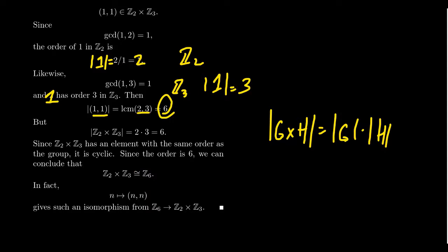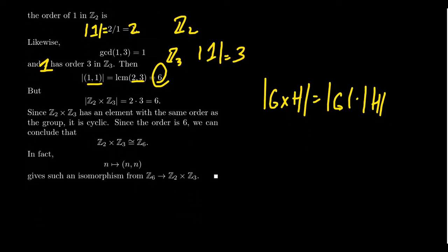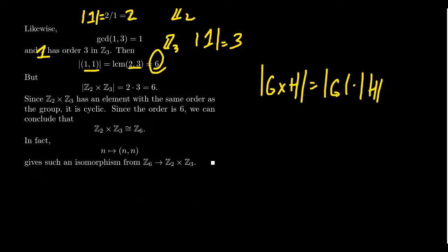And in fact, the way the isomorphism is, if you go from Z₆ to Z₂ cross Z₃, the map is just send n to (n,n), and reduce mod 2 and 3 respectively. So if you were to go through all the possible elements, let's actually look at the details of this really quickly.